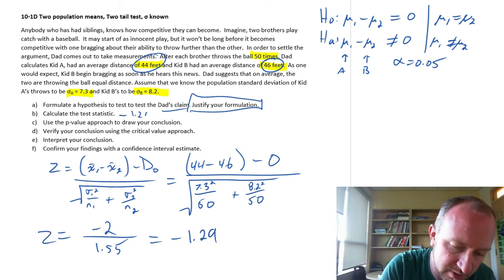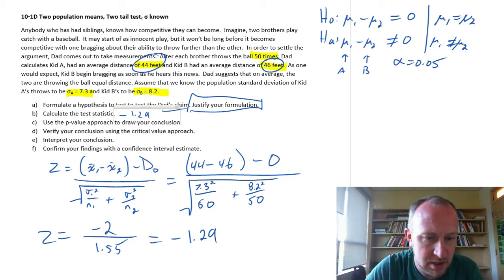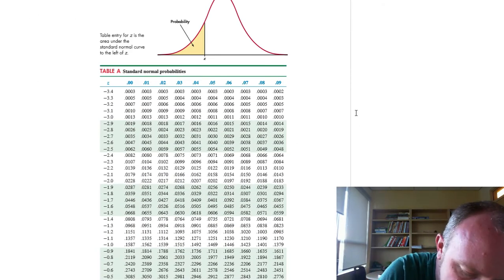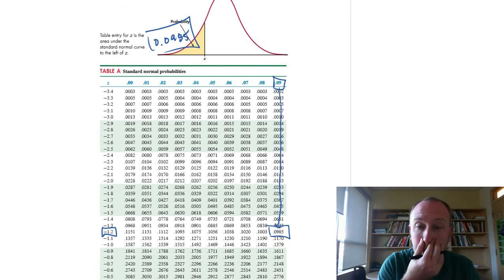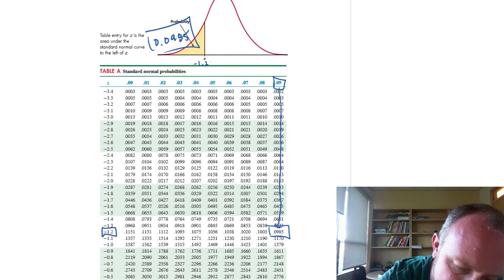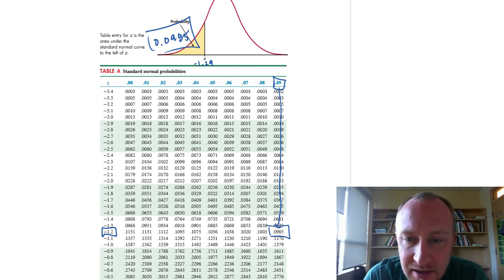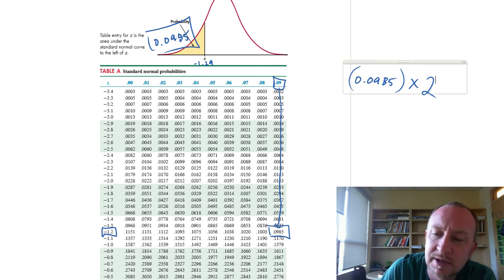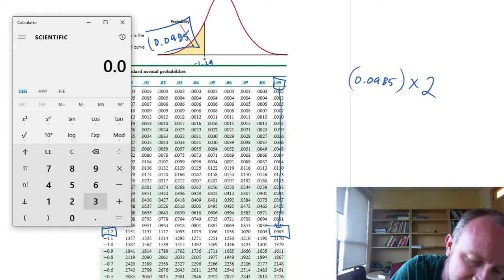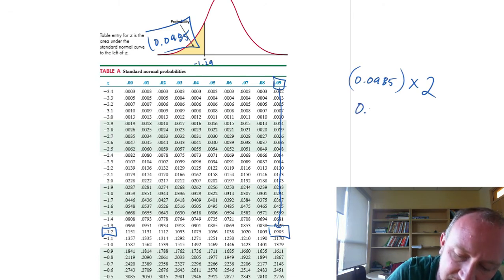Now we have negative 1.29. Let's use our p-value approach. Go to our tables, look up negative 1.29. So we're way out here. I have a value of 0.0985. And we don't have to make any adjustments to it. That is the lower extreme for that test statistic, negative 1.29. I don't have to make any 1 minus adjustments. But what we do have to do here, because this is a two-tailed test, is multiply that by 2 in order to obtain our p-value. So let's get that calculator: 0.0985 times 2. And I have a value of 0.197.